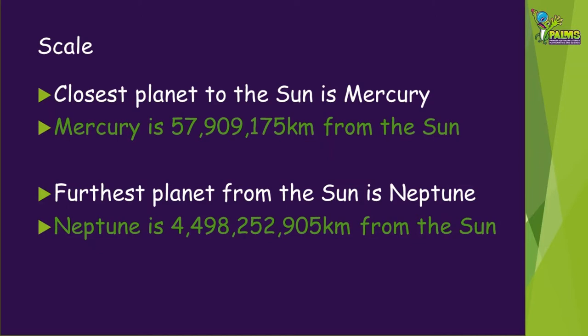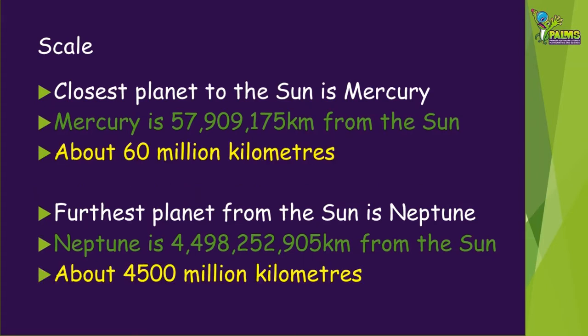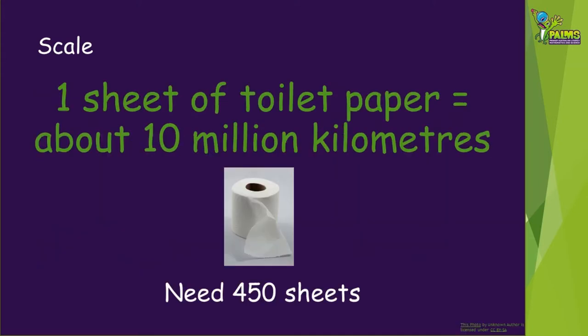You can't get a toilet roll with millions of sheets, so we need to work at a scale that will make it possible to represent these distances with just a toilet roll or two. Let's make those big numbers a little easier to deal with by rounding them. We can say Mercury is about 60 million kilometres from the sun and the distance to Neptune is about 4,500 million kilometres. Since 4,500 million kilometres is the largest distance we need to represent and some toilet rolls have 400 sheets of paper, the most practical scale we could use is one where one sheet of toilet paper represents 10 million kilometres in the solar system.